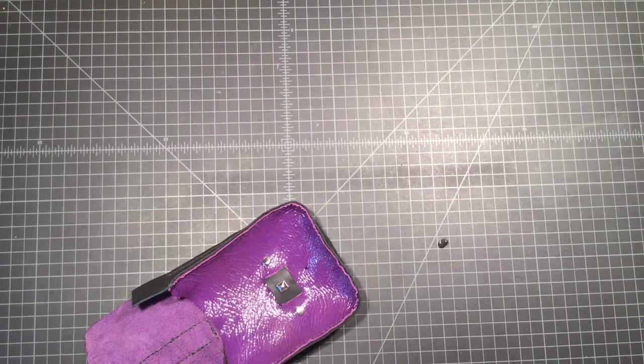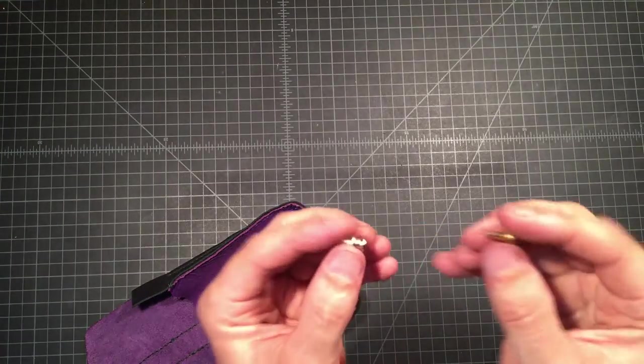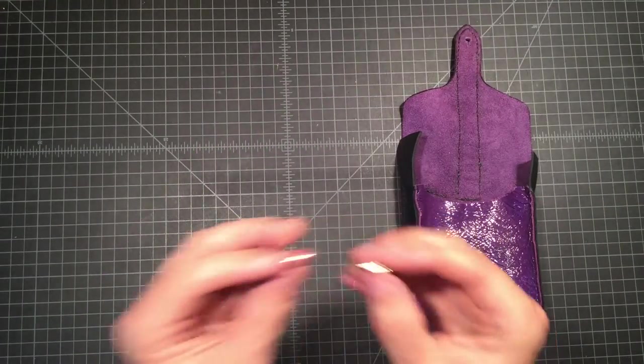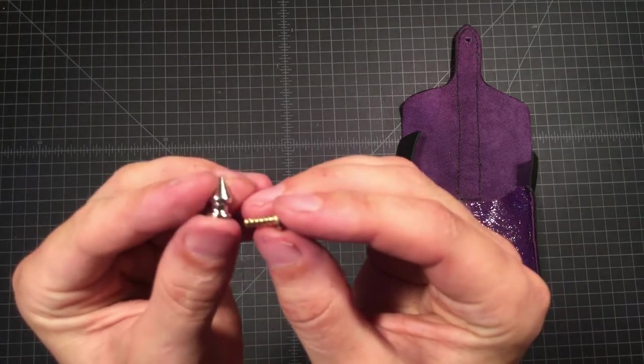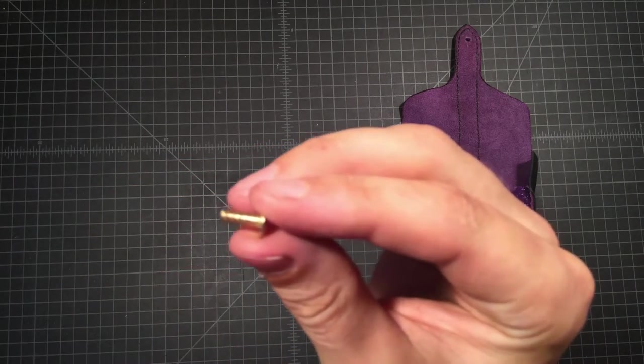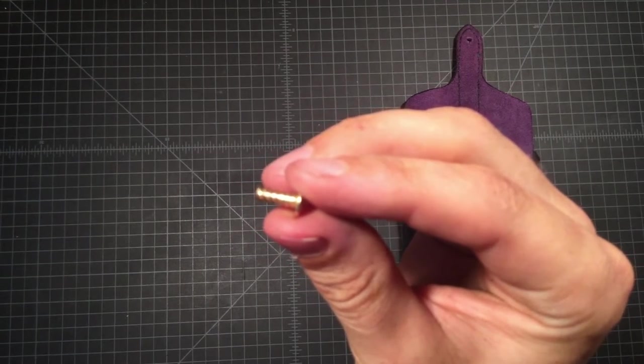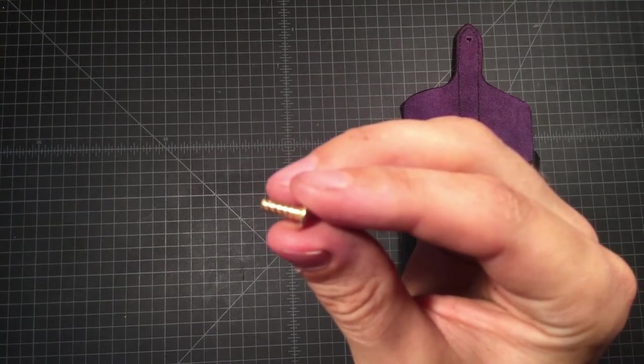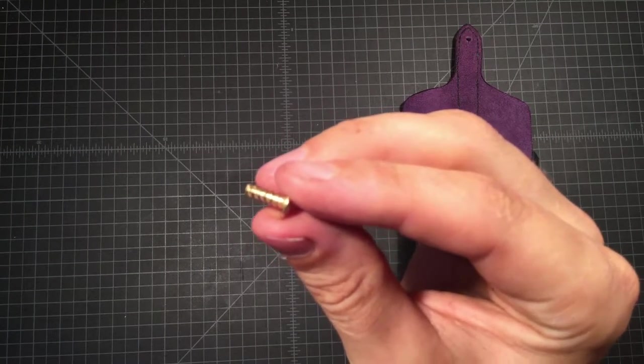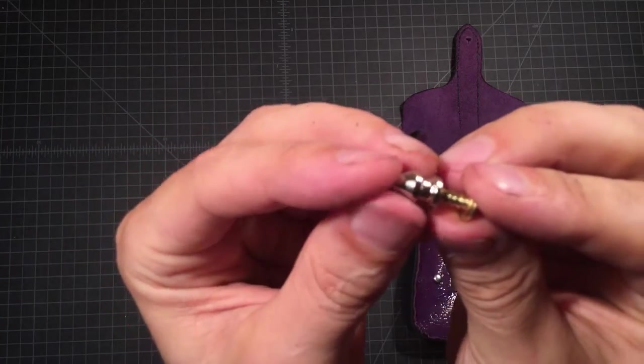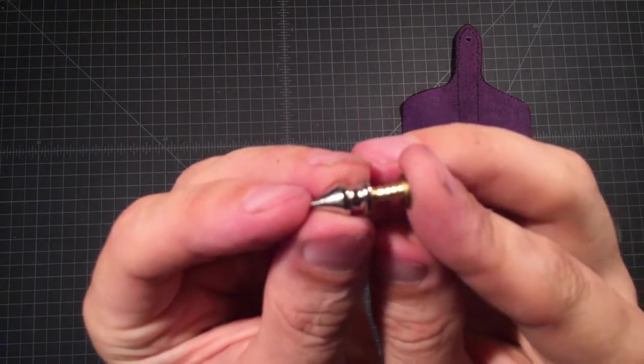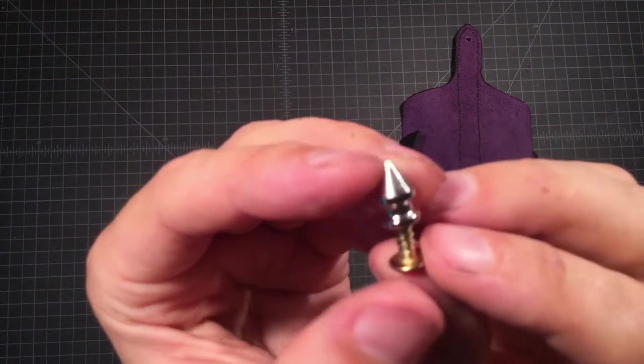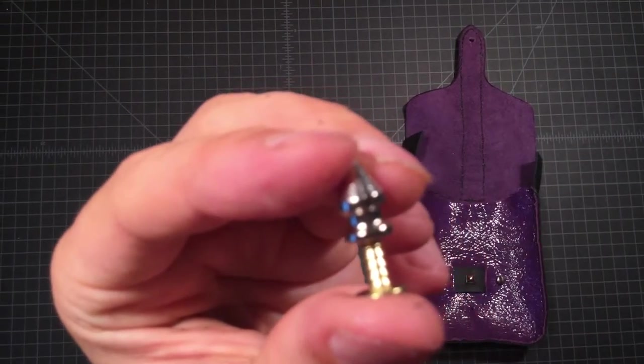But before we do that, we need to talk about how these little things work. So you've got spike studs, right? There's a little spike and then there's a barb. And the barb component has to seat into the spike component. So you need those to come together fairly closely.